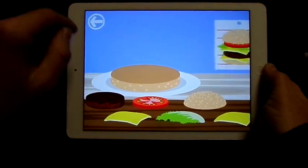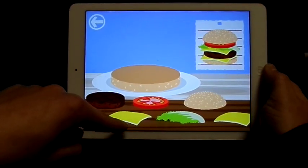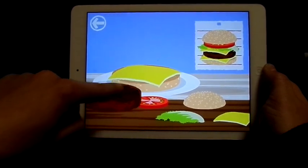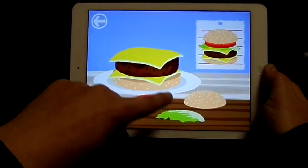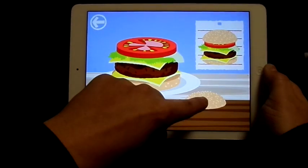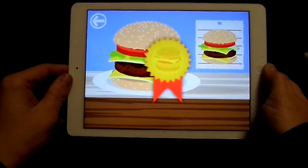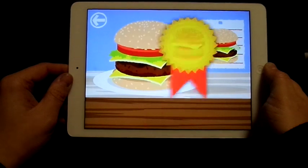And then the next one is the burger shop. So then you've got to make the burger as it looks in the picture. So we've got cheese, cheese burger, cheese, lettuce, tomato, and the bun. That's that.